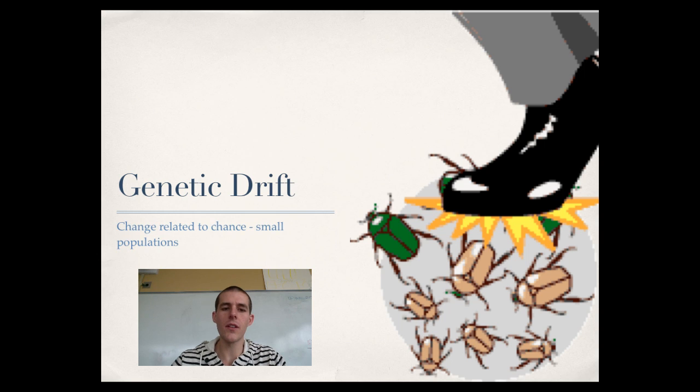As we talk about natural selection, there are a couple different things we want to talk about. First thing I want to mention is genetic drift. This is a change in allele frequency related to chance, and this deals with small populations. If you've got a small population, your gene pool is very small. If you lose part of your population, you have lost a disproportionately large amount of your gene pool. You see the picture of a foot stepping on a population of beetles. If that population had six brown beetles and three green beetles and a foot crushed the three green beetles, that foot has had a disproportionate effect on your population.